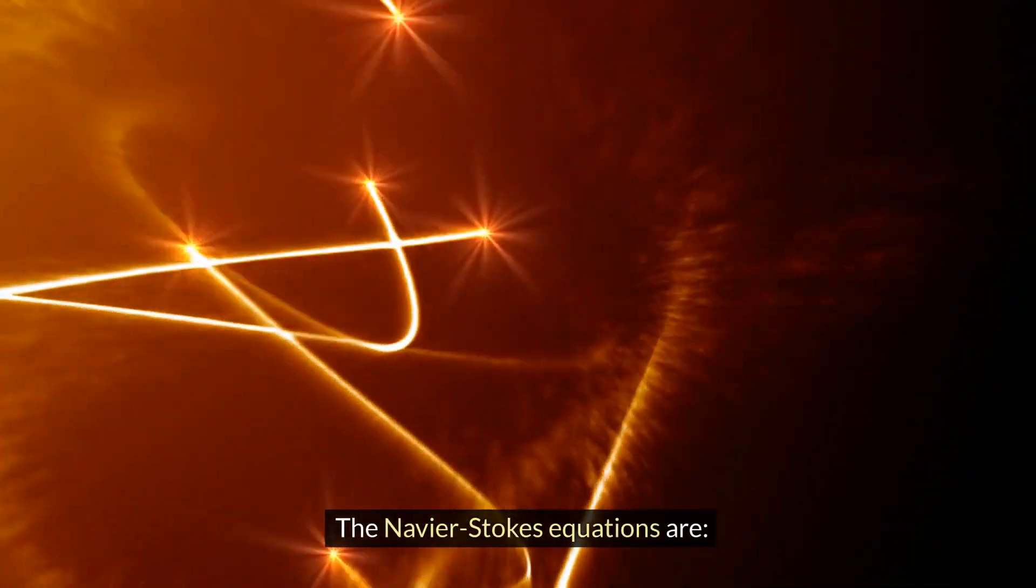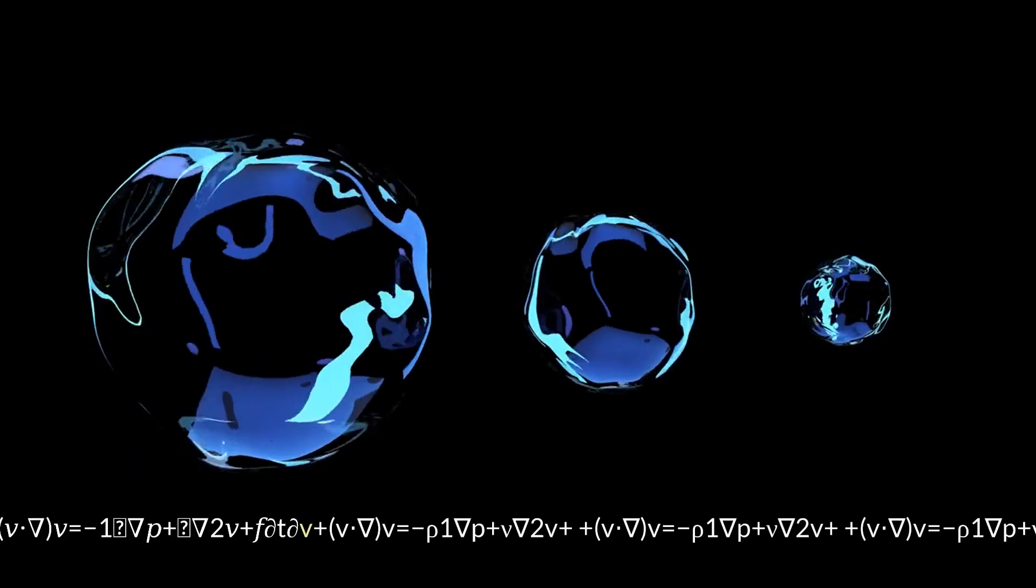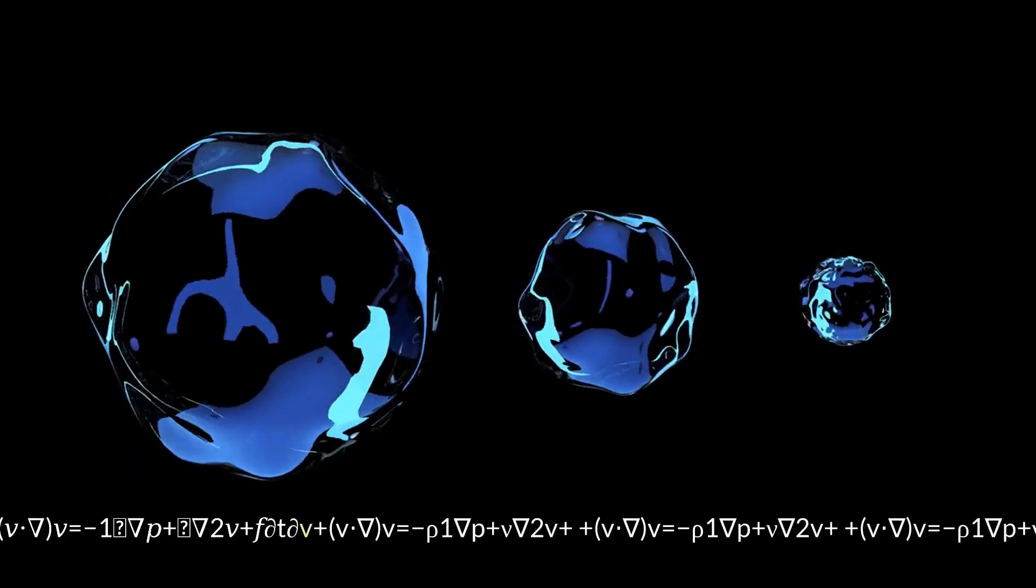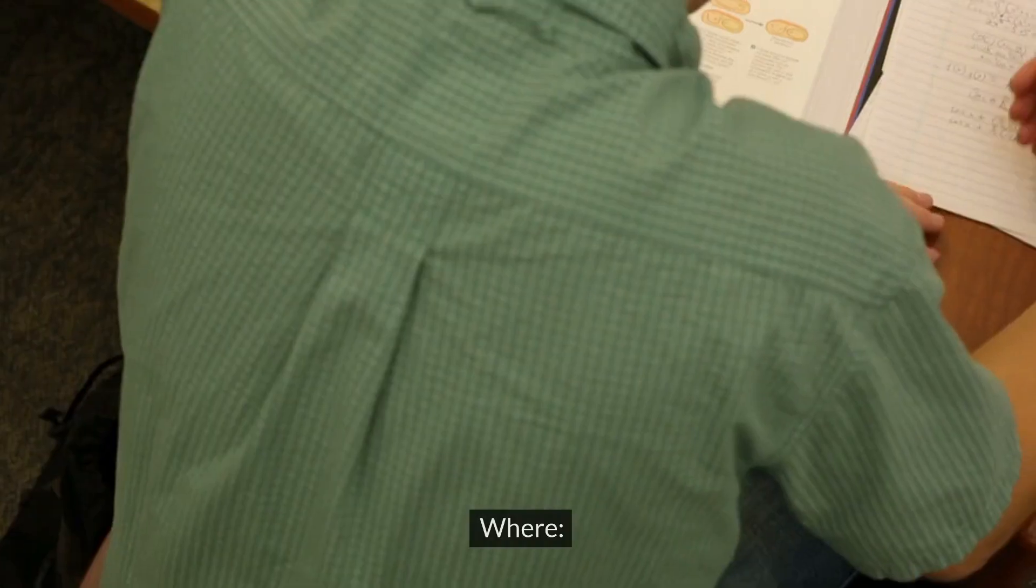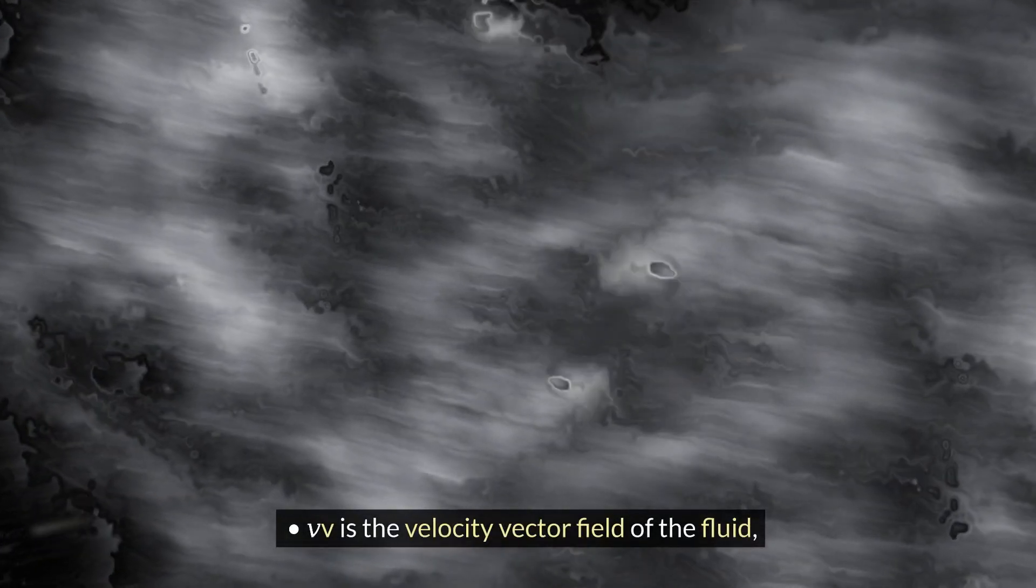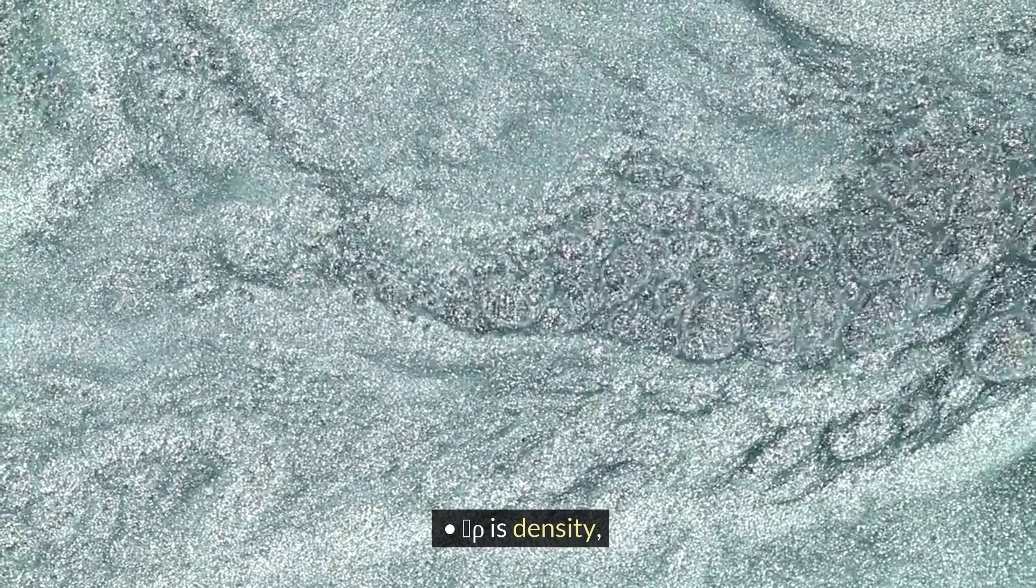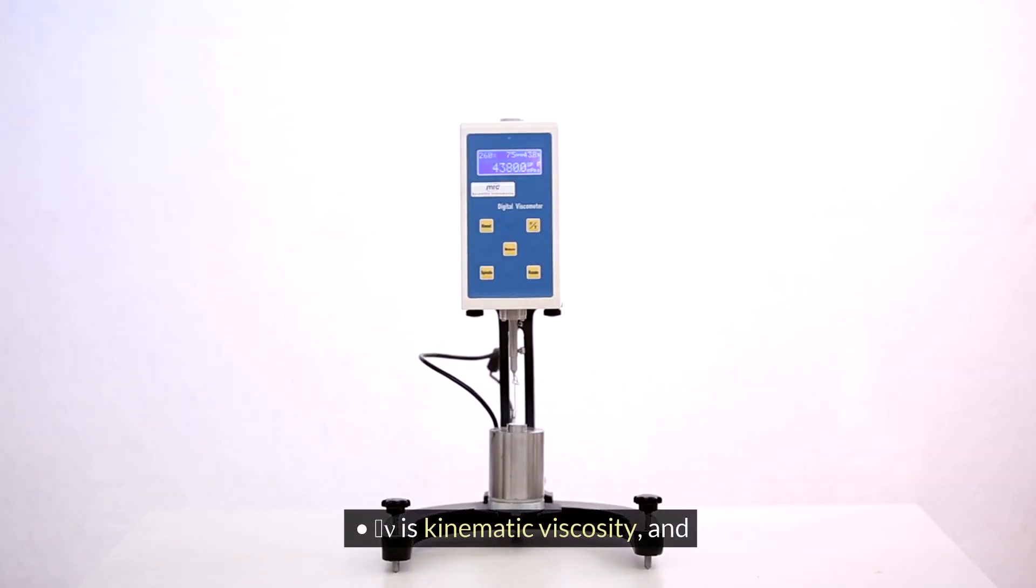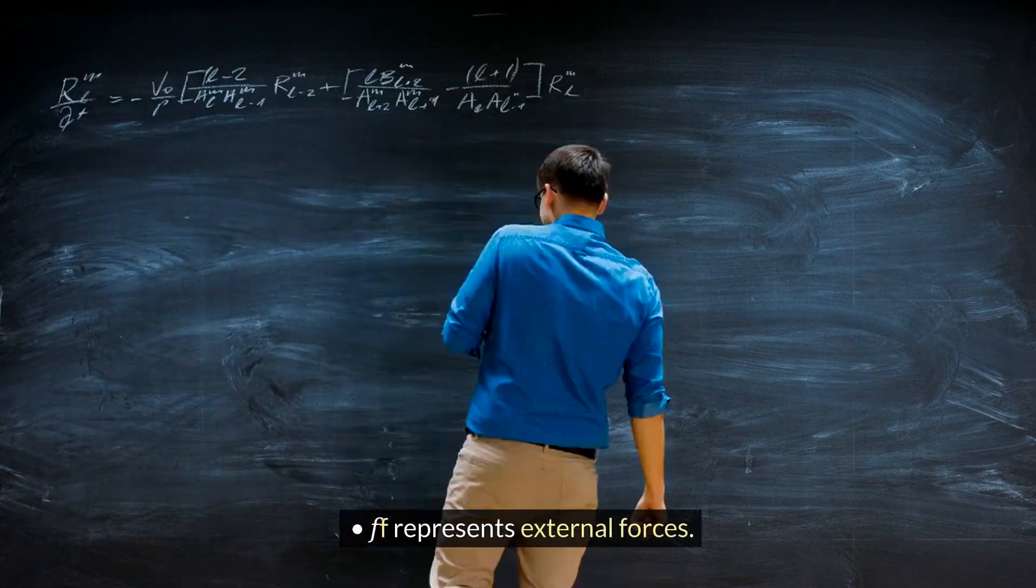The Navier-Stokes equations are ∂V/∂t + (V·∇)V = -1/ρ ∇p + ν∇²V + f, where V is the velocity vector field of the fluid, t is time, p is pressure, ρ is density, ν is kinematic viscosity, and f represents external forces.